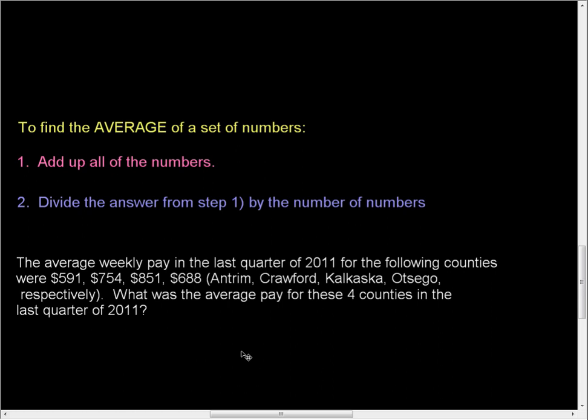Okay, so the average weekly pay in the last quarter of 2011 for the following counties were $591, $754, $851, and $688. That was Antrim, Crawford, Kalkaska, and Otsego counties in Michigan. What was the average pay for these four counties in the last quarter of 2011?